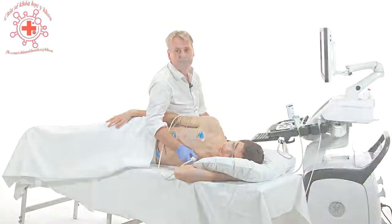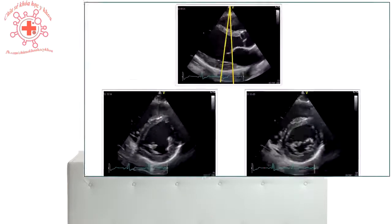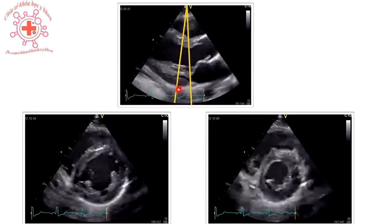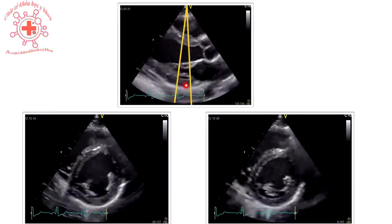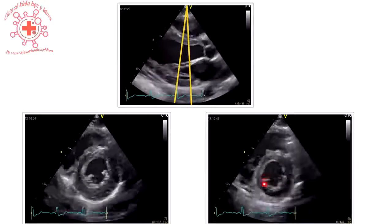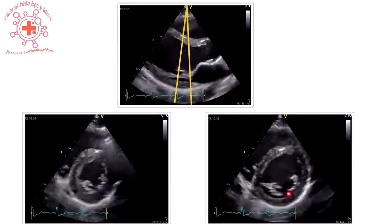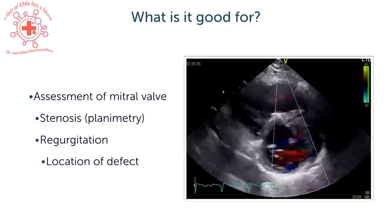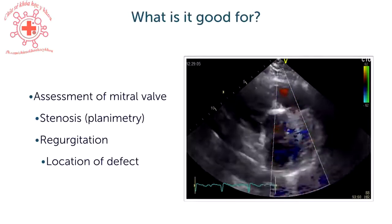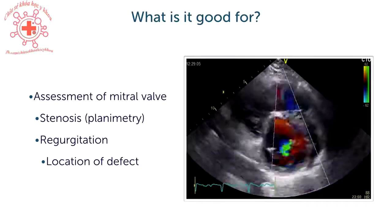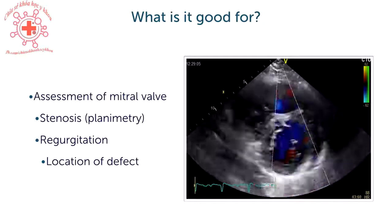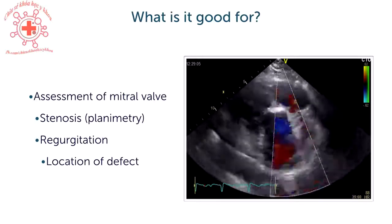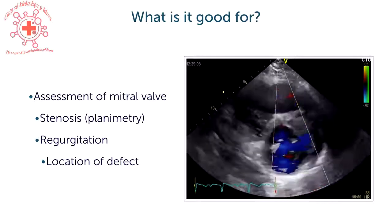This is a very important view if you want to exactly localize a mitral valve pathology. If you want to image the mitral valve in an optimal position, it's very important that you transect the mitral valve at its tips. If you're too far caudal, you will only image the subvalvular apparatus, so you need to scan back and forth to find the optimal position where you really see the fish mouth. This view is used to look at the mitral valve, tumors, degree of calcification, and mitral annular calcification, but it is especially important for quantifying the severity of mitral stenosis by performing planimetry. You can also assess the origin of mitral regurgitation.